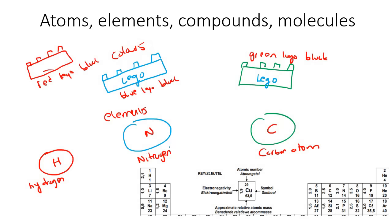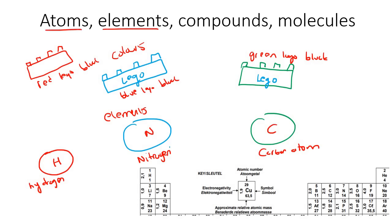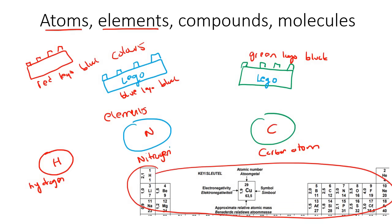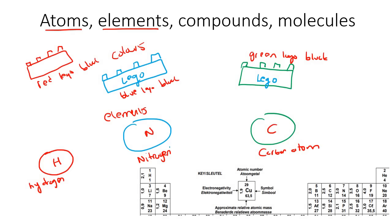Just like we can say we have a red Lego block, a blue Lego block, and a green Lego block — they're all Lego blocks, but they are the different types. So we know now what atoms are, and the elements are just the different types that you get.